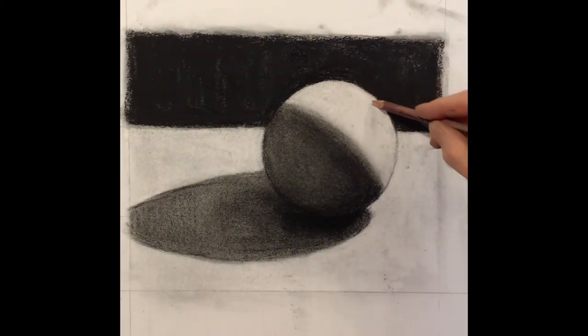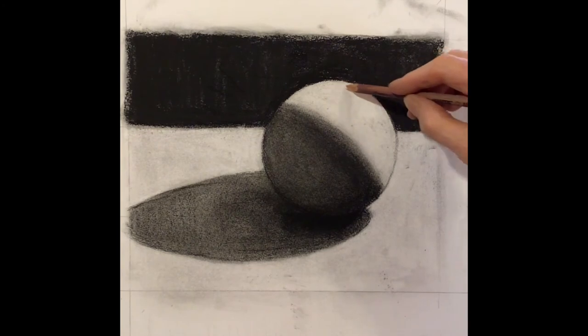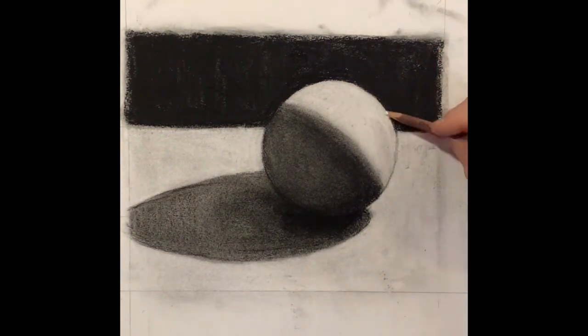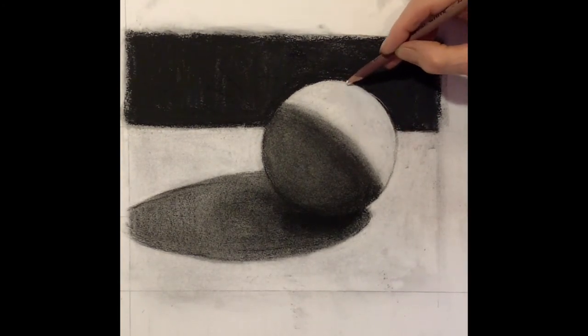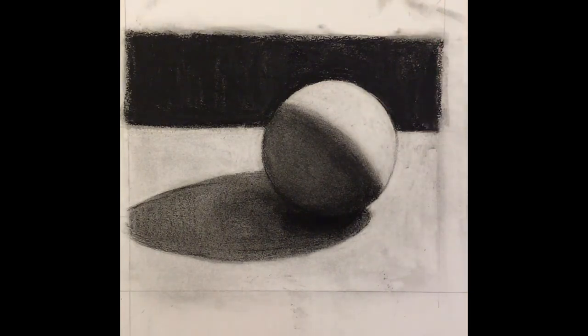Adding just a little bit of white pencil in here to clean up that edge. I got a couple of marks on my light side that I couldn't erase out. So I'm just touching them up a little bit with white pencil.